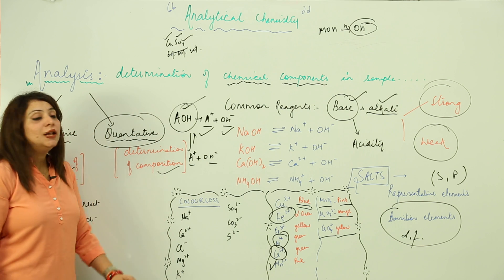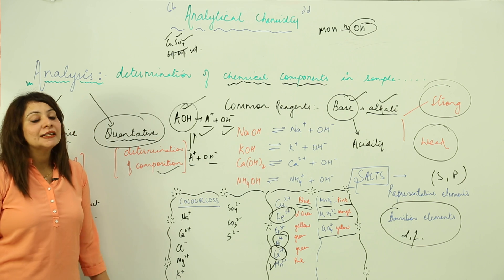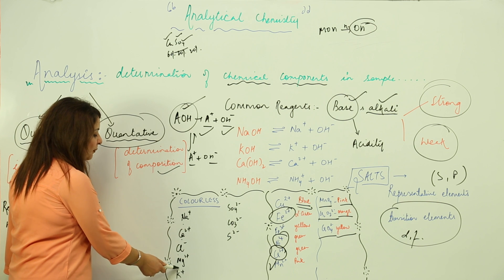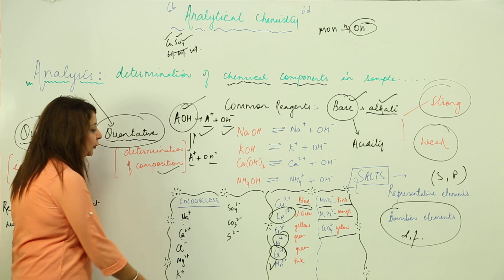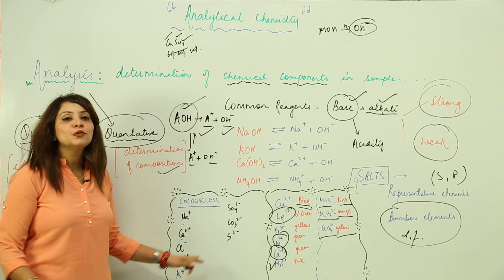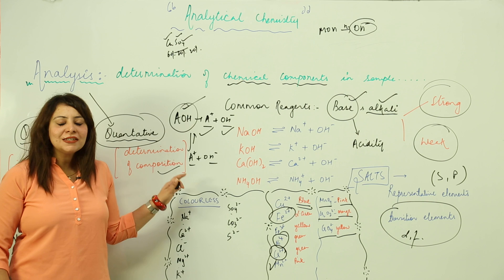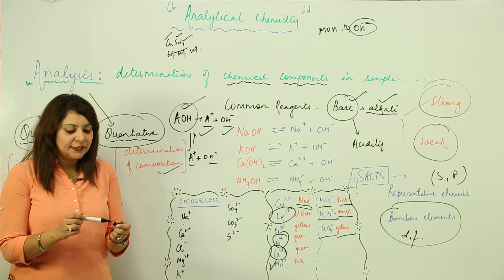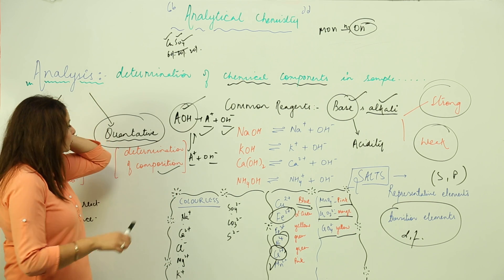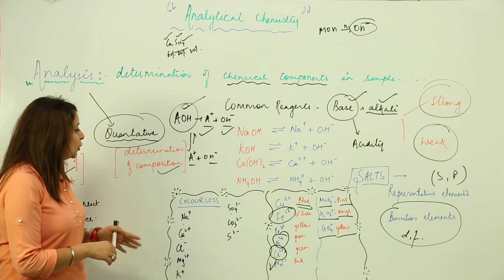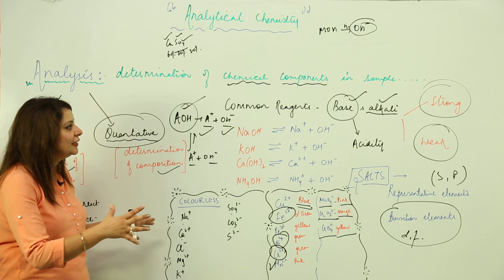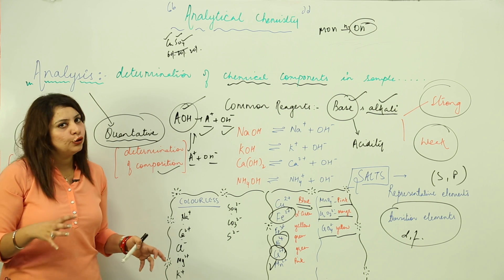The colorless salts are those of representative elements — the S and P block elements. Examples include Na⁺, calcium, chloride ion, magnesium ion, potassium ion, sulfates, carbonates, and sulfides. Keep in mind that the salts of representative elements are generally colorless — meaning white in color. This covers the basics of analysis that you should know.